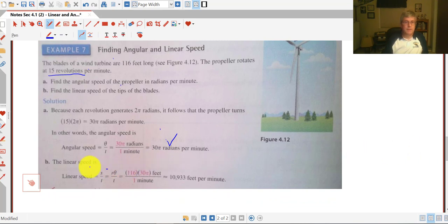The linear speed. Linear speed is s over t or our arc length. And our arc length, remember, is r times theta. And our theta is 30 pi from above. And our radius, we got to grab the length of that blade. So our radius is our blade length, 116 times 30 pi divided by our time, one minute.